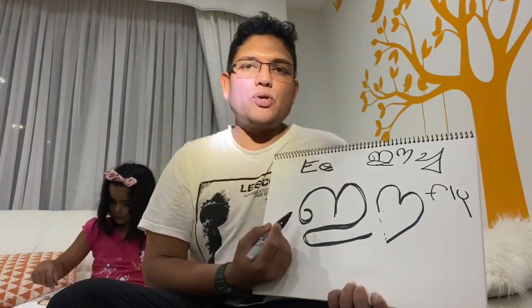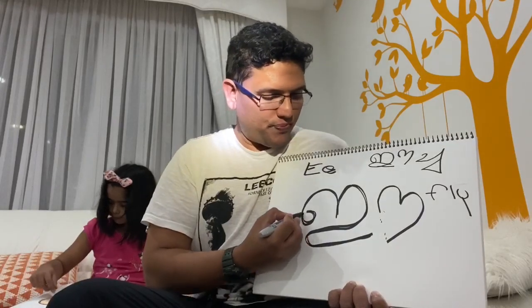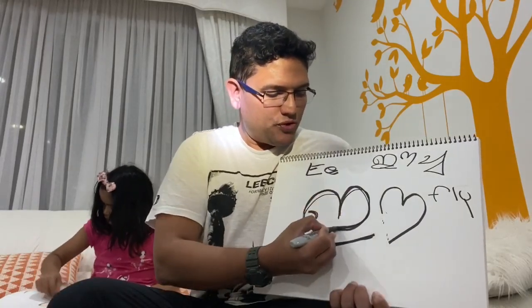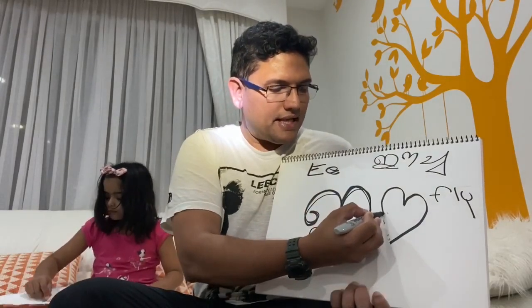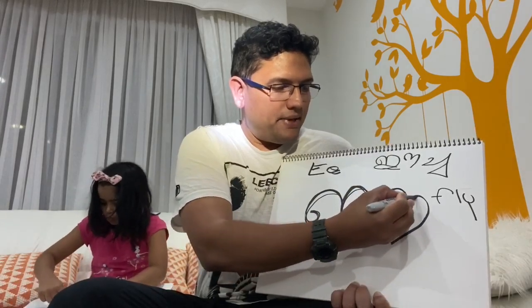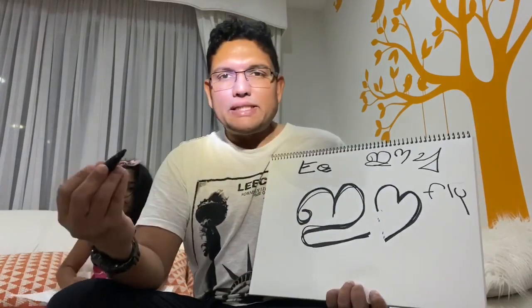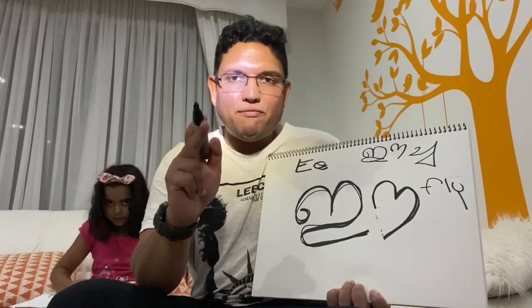I'll just go through how to write the ഈ once more. So you go like this and like this, and this is the extra bit that goes to make it an ഈ. So let's learn how to draw an Eecha, or a fly, from this ഈ.